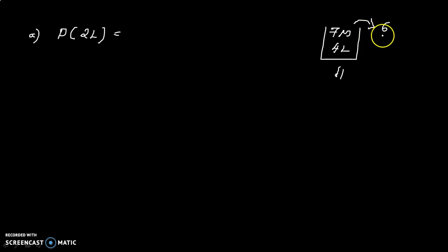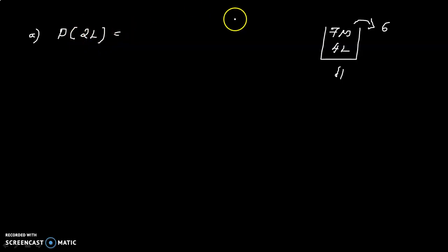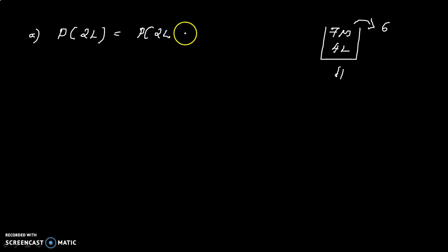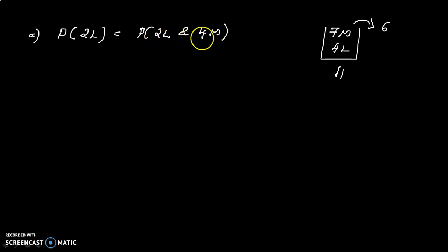In the six-member committee, exactly two ladies are selected. That means two ladies and four men are in the committee. The probability formula is P = m/n, where n equals 11C6 as the denominator. Now what is the numerator? We need to choose exactly two ladies from the four available ladies.